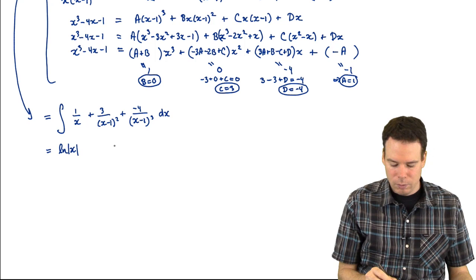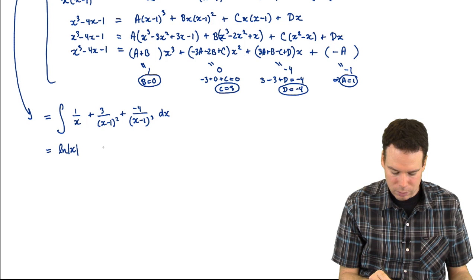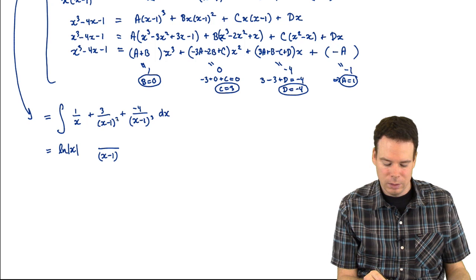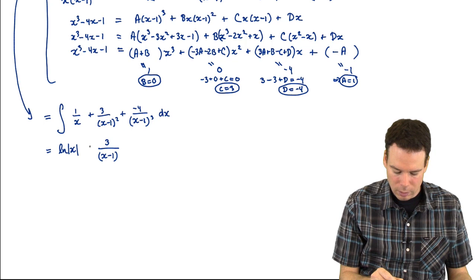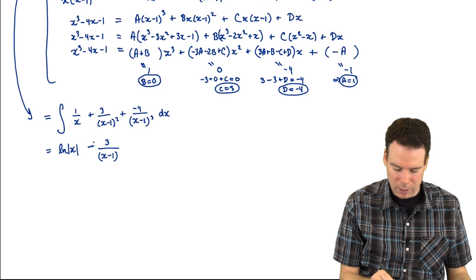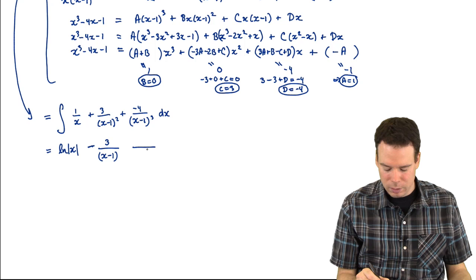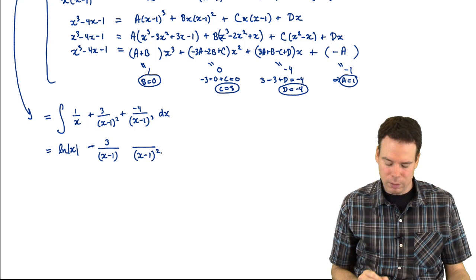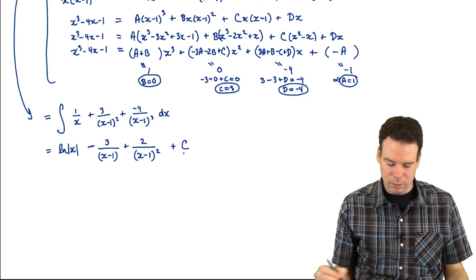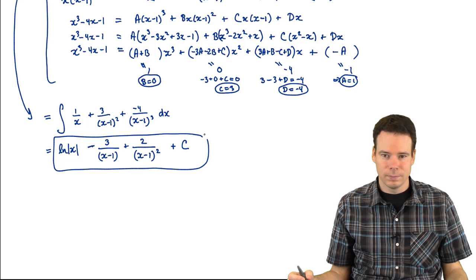The integral becomes the integral of 1 over x plus 3 over (x minus 1)² minus 4 over (x minus 1)³, dx. Anti-differentiating term by term: the first gives ln|x|. The second: (x minus 1)² on the denominator is a negative 2 power, so the anti-derivative is negative 3 over (x minus 1). The third: (x minus 1)³ integrates to give plus 2 over (x minus 1)². The result is ln|x| minus 3/(x minus 1) plus 2/(x minus 1)² plus C.